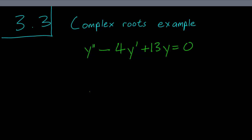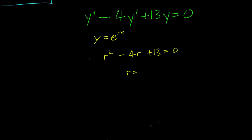So we have this differential equation and we make our usual substitution y equals e^rx and we obtain the characteristic polynomial r squared minus 4r plus 13 equals 0. So we use the quadratic formula to determine the roots of this polynomial.